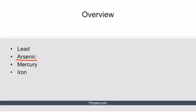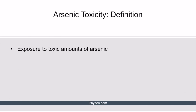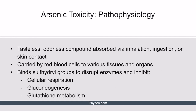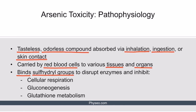Arsenic toxicity is characterized by exposure to toxic amounts of arsenic. Unlike lead, knowing the exact arsenic levels in the blood is not important for the boards. Arsenic is a tasteless, odorless compound that can be absorbed via inhalation, ingestion, or skin contact. Once in the system, it is carried by red blood cells to various tissues and organs, where it exerts its toxic effects primarily by binding sulfhydryl groups on enzymes, disrupting their function and leading to inhibition of cellular respiration, gluconeogenesis, and glutathione metabolism.